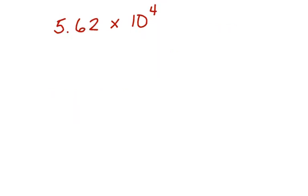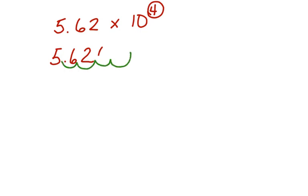Let's look at another one: 5.62 times 10 to the 4th. Again, we're going to write this as a value. We're going to move our decimal point four places to the right — 5.62, 1, 2, 3, 4. Put in two zeros and rewrite the number. Our answer is 56,200.